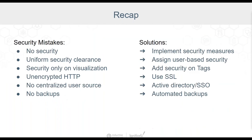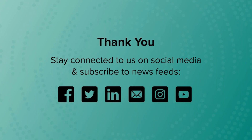Now back to Kent for a recap. The first mistake is having no security measures — the solution is to implement the security practices we've covered. The next mistake is having uniform security clearance, which is solved by assigning user-based roles so that security is managed on a person-by-person basis. Next is having security only on visualization — that's not enough; you need to secure your tags themselves. Having unencrypted HTTP isn't sufficient either, so use SSL to keep all information encrypted. If you don't have a centralized user source, use Active Directory for authentication, and increase security further by implementing two-factor authentication. Finally, if you don't have gateway backups, use automated backup solutions either on a single gateway or at an enterprise scale.